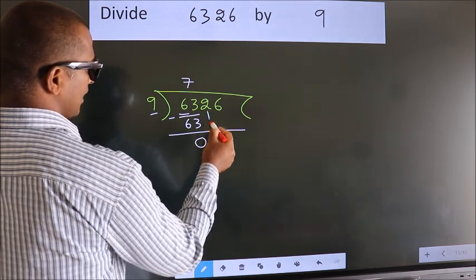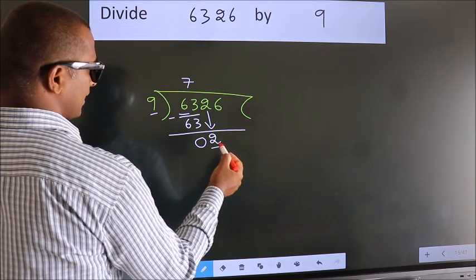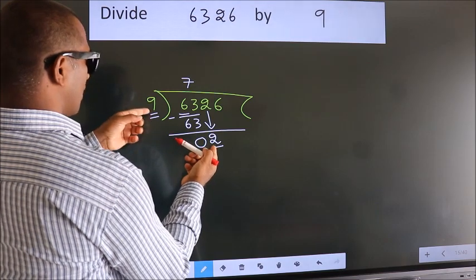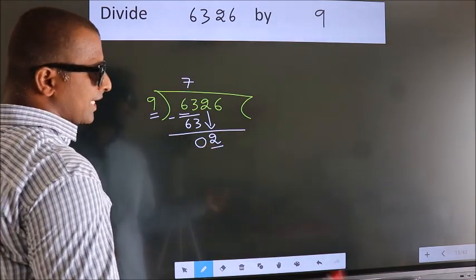After this, bring down the beside number. So 2 down. Here we have 2. Here 9. 2 is smaller than 9, so we should bring down the second number.